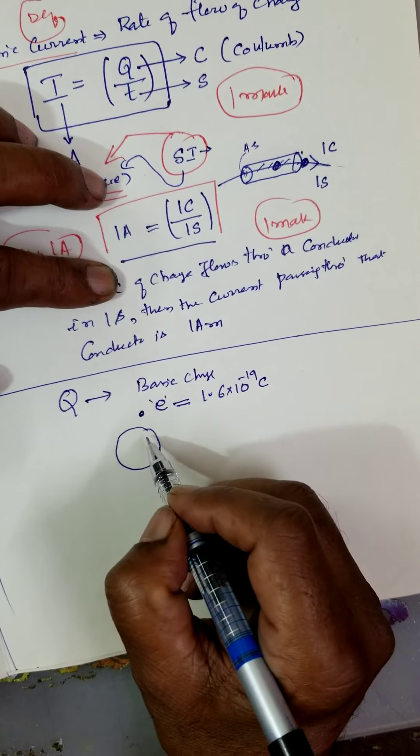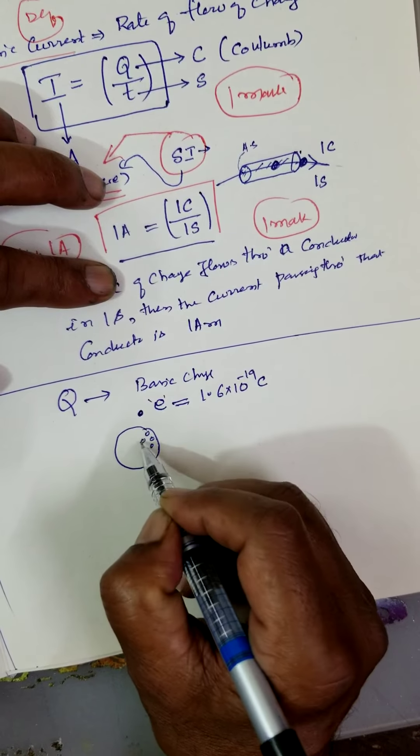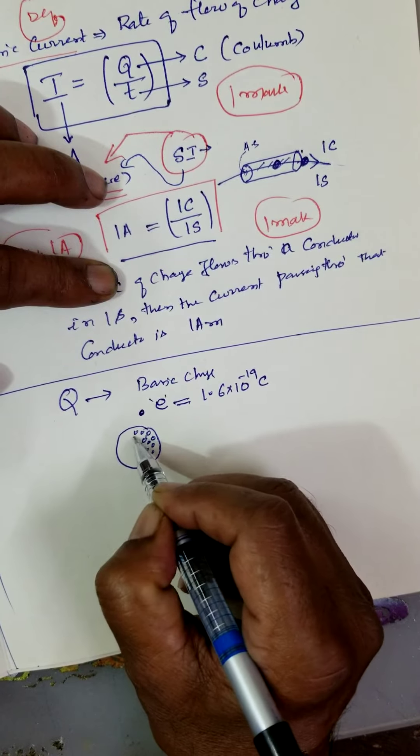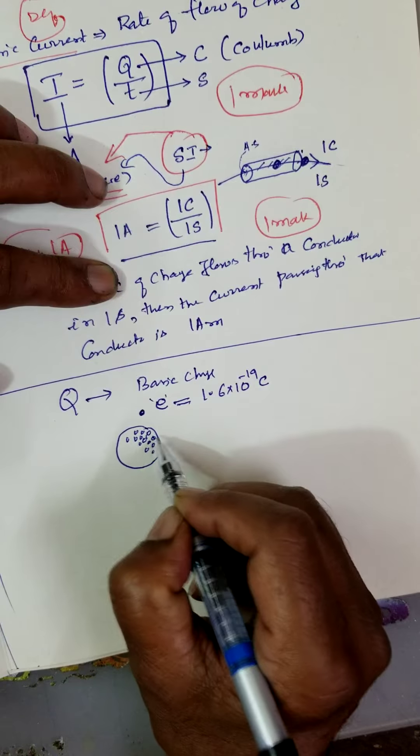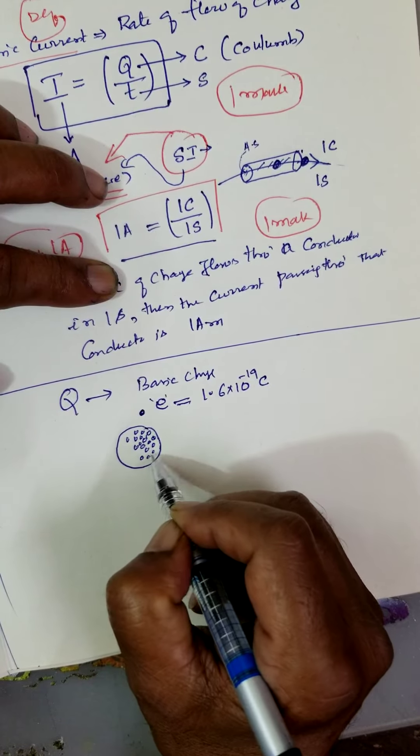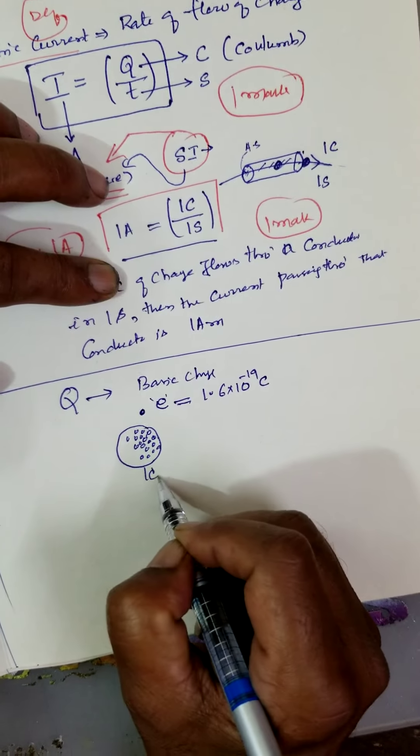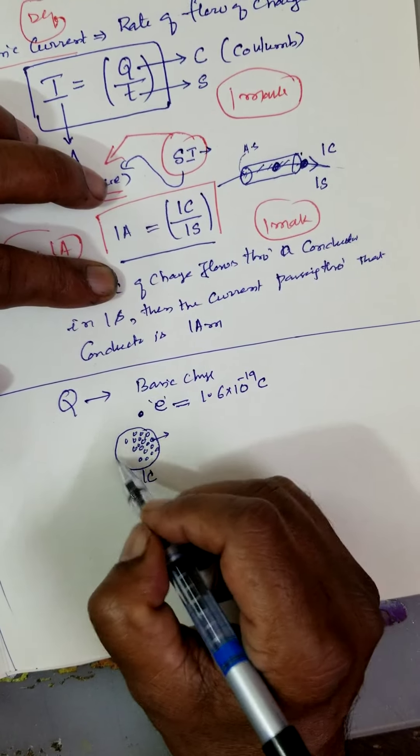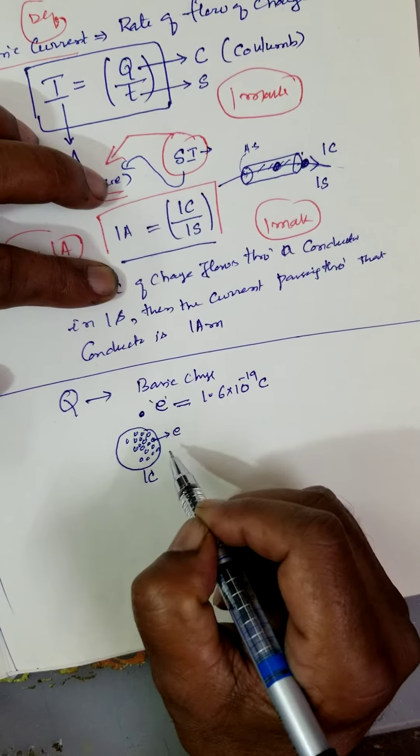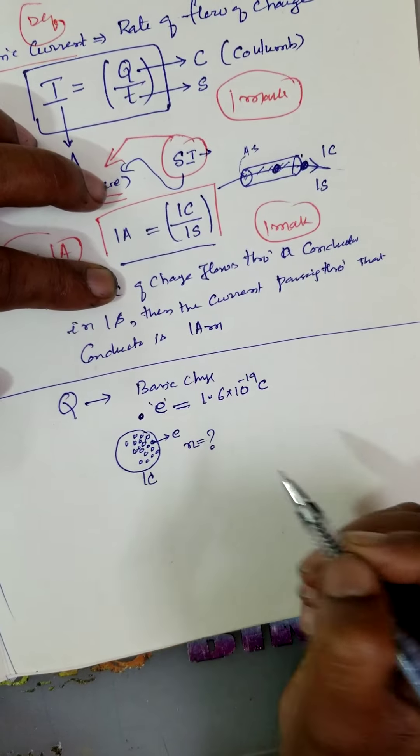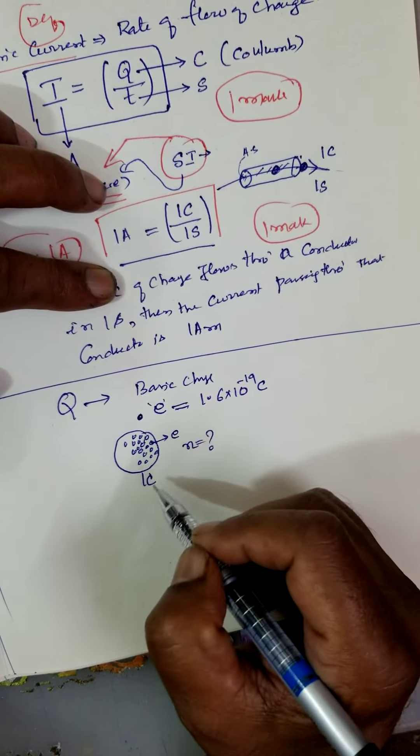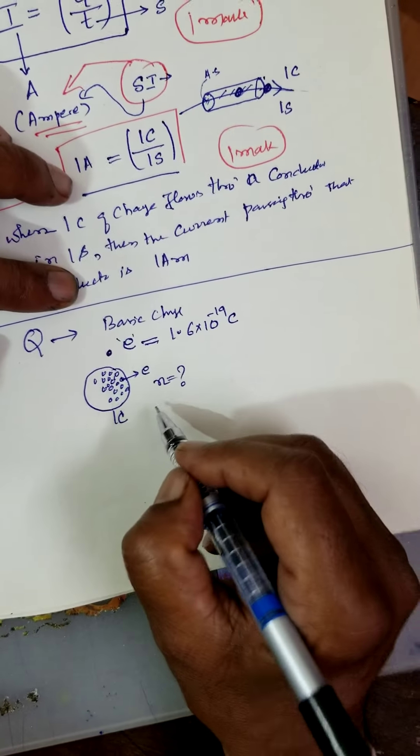You have seen the ladu? Ladu is made up of a lot of bundes, a lot of units. Like this, it is one unit. This is one coulomb, but it contains so many electrons. How many electrons? How many electrons form one coulomb? The method is very simple.